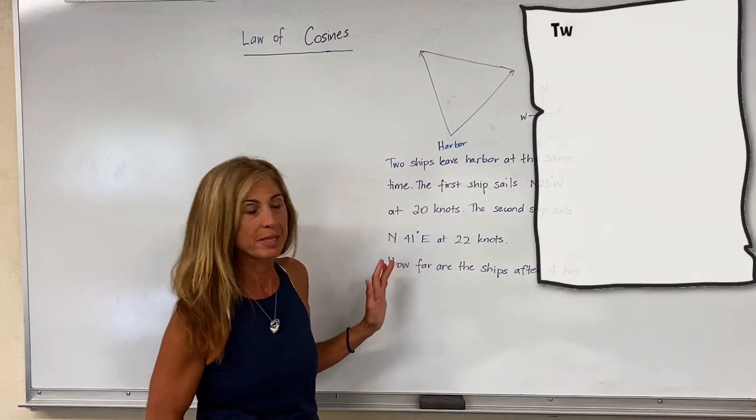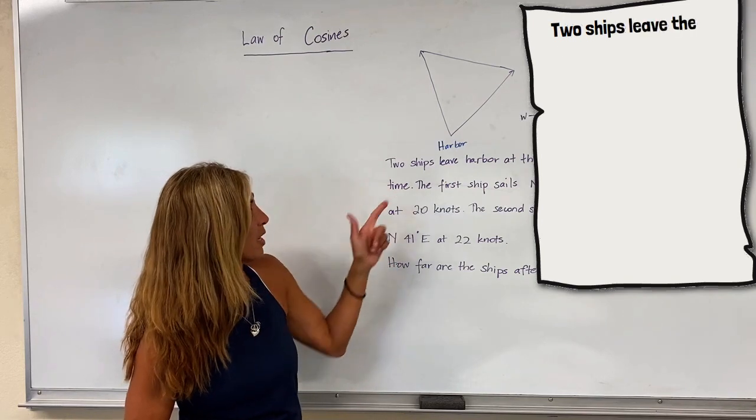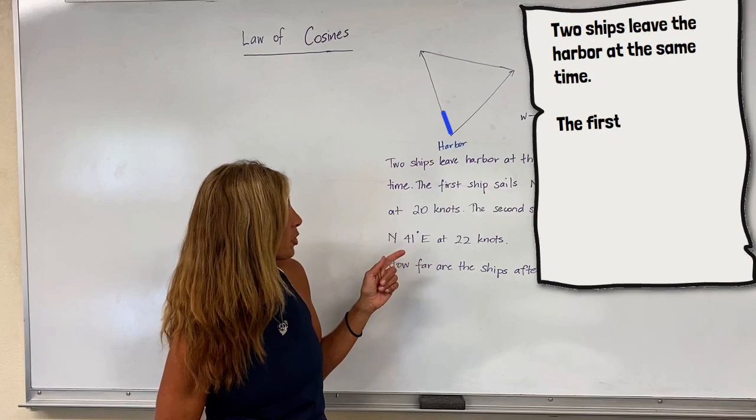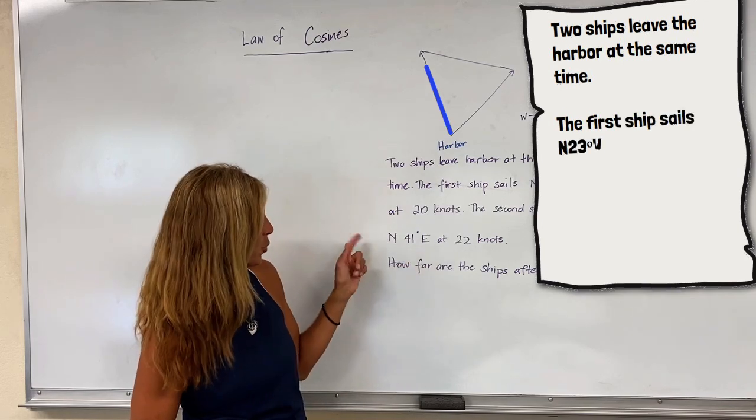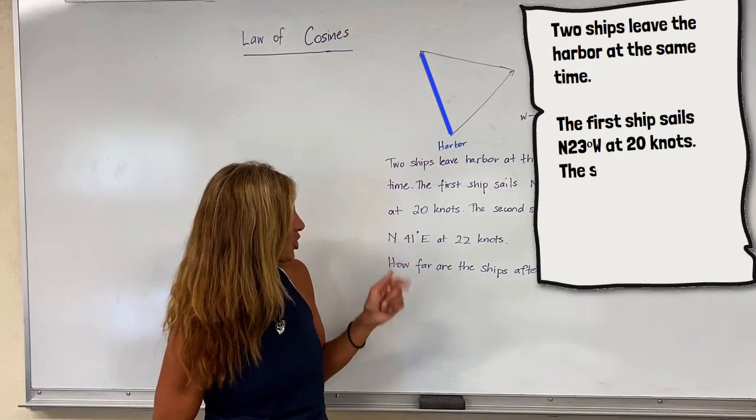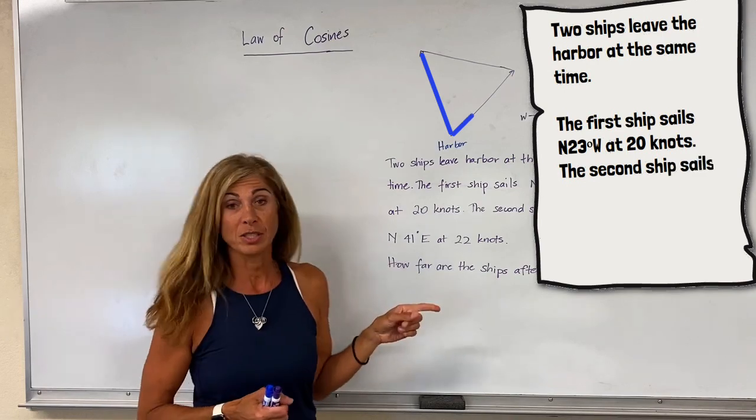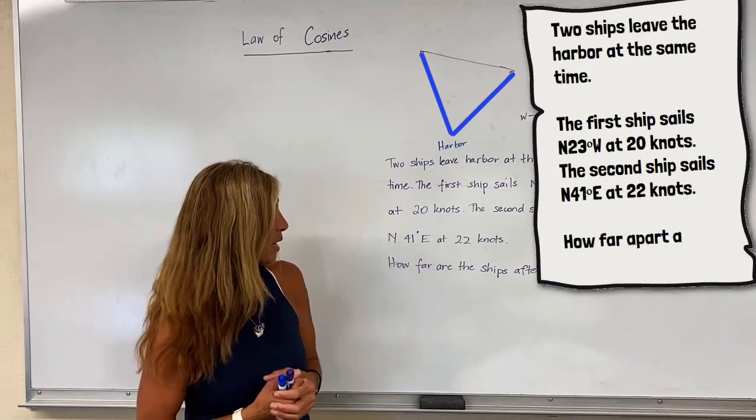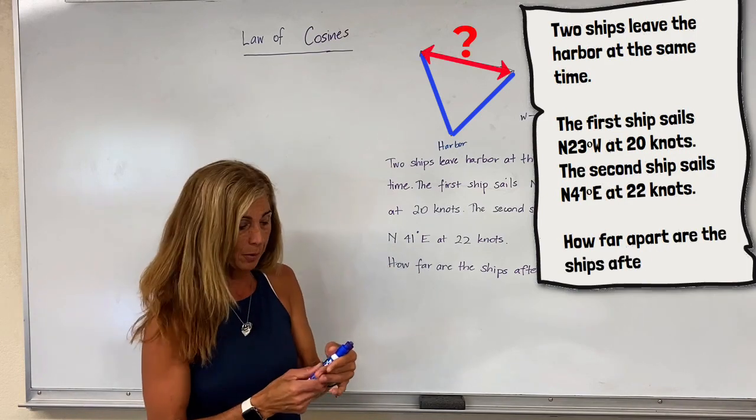Here is a typical problem setup. Two ships leave the harbor at the same time. The first ship sails north 23 degrees west at 20 knots. The second ship sails north 41 degrees east at 22 knots. How far apart are the ships after four hours?